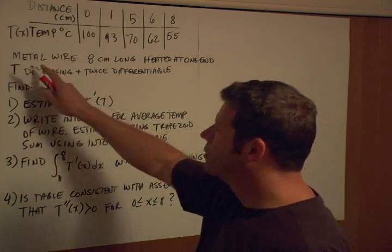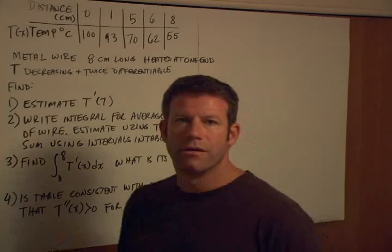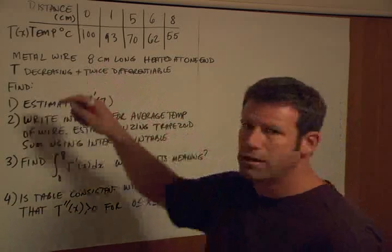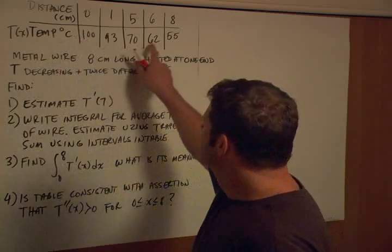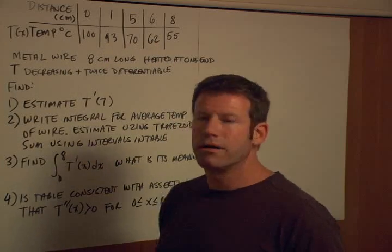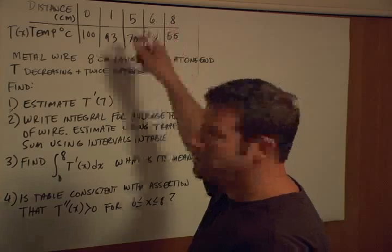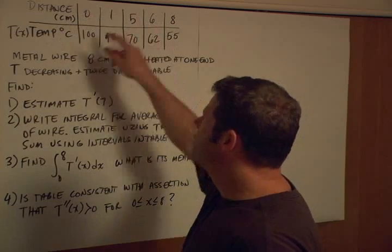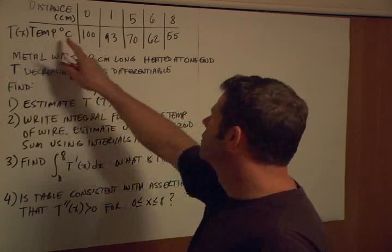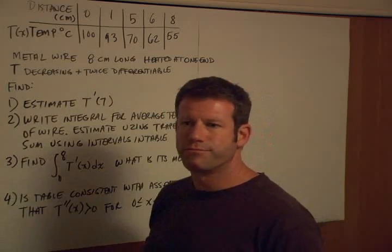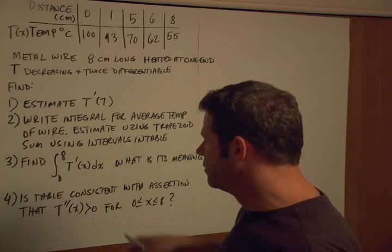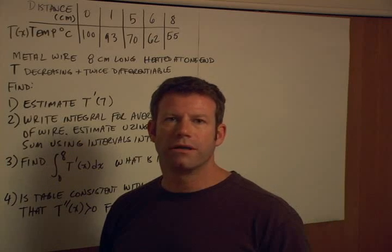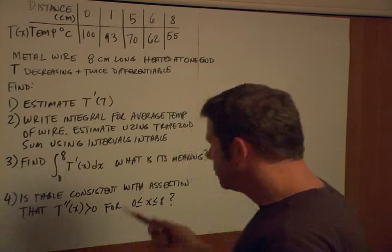Essentially, you're given a metal wire that's being heated at one end. It's eight centimeters long, and you're given data sporadically along the length of the wire. Note that the data is not at equal intervals — we have distance in centimeters and temperature T(x) in degrees Celsius. Then we're asked to evaluate a number of questions based on that, and we'll go through these in order.